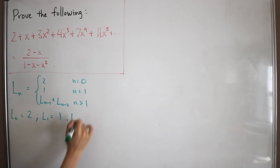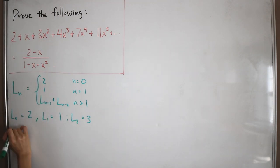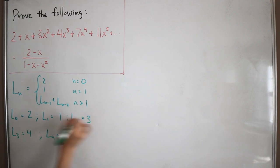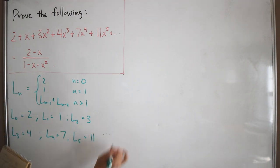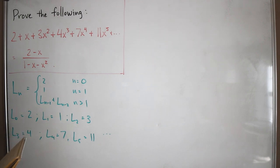So L_0 = 2 and L_1 = 1 by definition. Then L_2 = 1 + 2 = 3, L_3 = 1 + 3 = 4, L_4 = 3 + 4 = 7, and L_5 = 4 + 7 = 11, and so on. You can see how the pattern is constructed, which matches exactly the coefficients in our original expression.